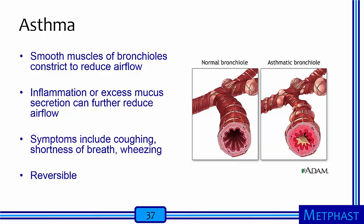In asthma, the smooth muscles of the bronchioles constrict to reduce airflow. Inflammation or excess mucus secretion can further reduce airflow. Symptoms of asthma include coughing, shortness of breath, and wheezing. Asthma is reversible, meaning that airways can return to normal with effective treatments.